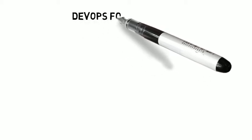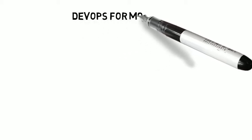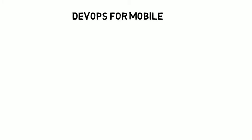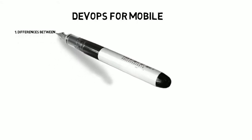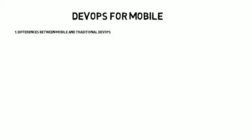Hi, and welcome to this week's Auspicious Agile video blog. I'm John Okoro. This is a continuation of our DevOps series. We're taking a look at DevOps for mobile today. We'll start by looking at the differences between mobile and traditional DevOps, then go into some mobile DevOps tools available on the market, and finally look at some of the challenges for mobile DevOps, giving you a good overview and starting point.